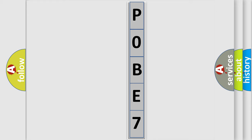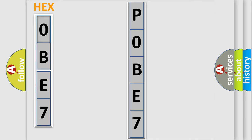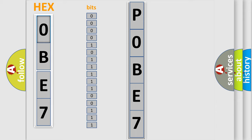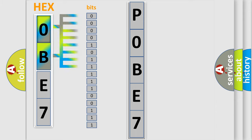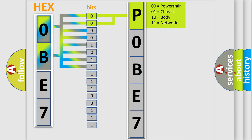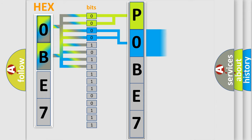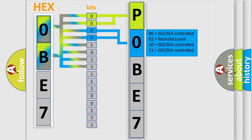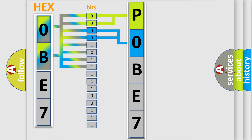The error code is split into two bytes consisting of 16 bits. One bit is the basic unit that each computer works with. The bit has two logical states: zero, low level, and one, high level. By combining the first two bits, the basic character of the error code is expressed. The next two bits determine the second character. The last four bits of the first byte define the third character of the code.